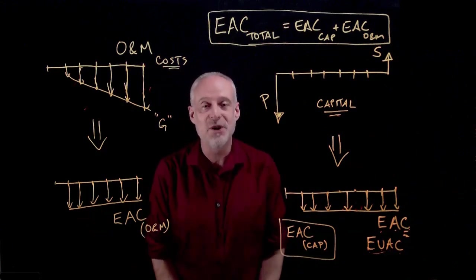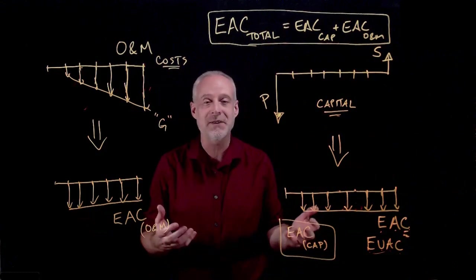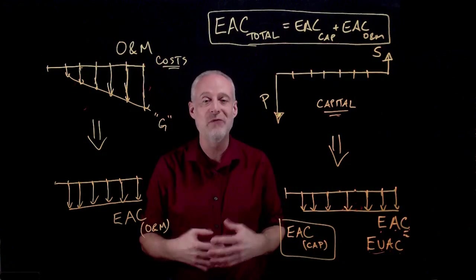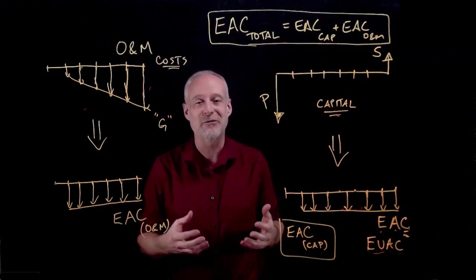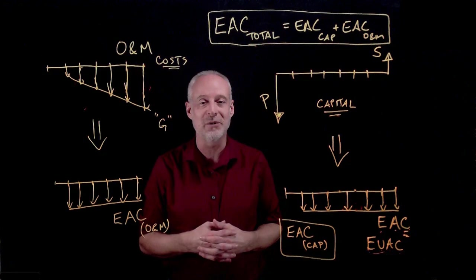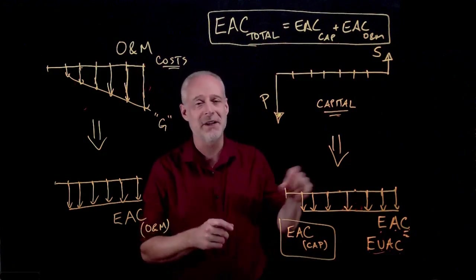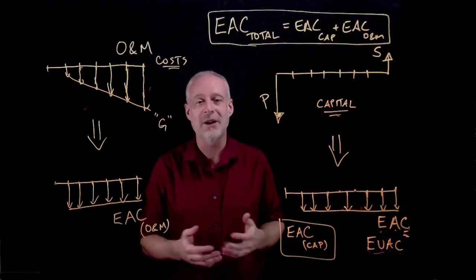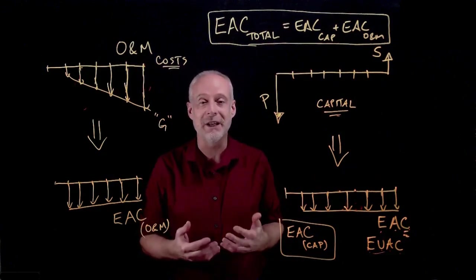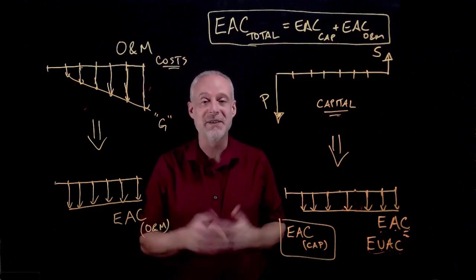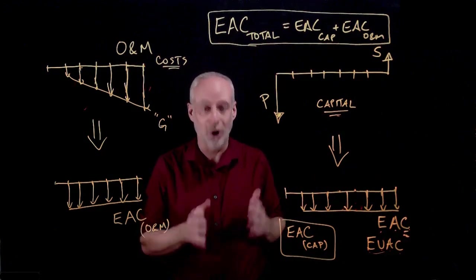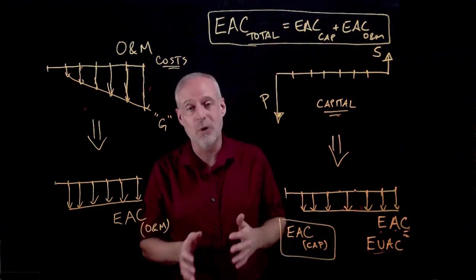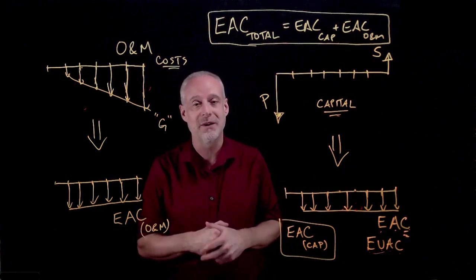The magical number of years to own an asset, we call that the economic life of an asset. And we've used the term life already a couple of times in this course where we talk about the life of the asset is just meaning how long we're going to own it for. But the term economic life has a real meaning, and the economic life of an asset is the optimum number of years to own it for that minimizes the equivalent annual cost of owning it.